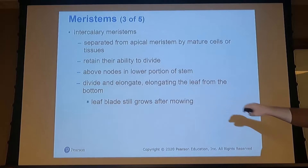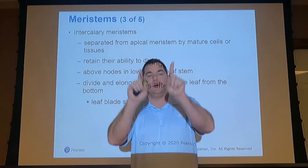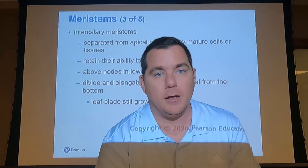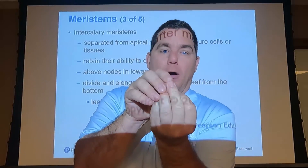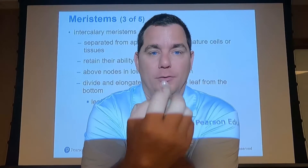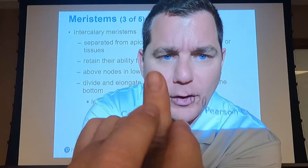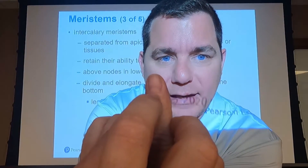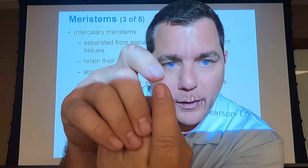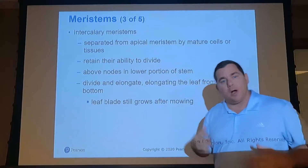Leaves grow from the bottom, not the tip — just like fingernails grow from the base, not the tip. When we clip fingernails we're cutting off the oldest part; when we cut grass we're cutting off the oldest part of the leaf. So intercalary meristems push new growth up from the bottom.